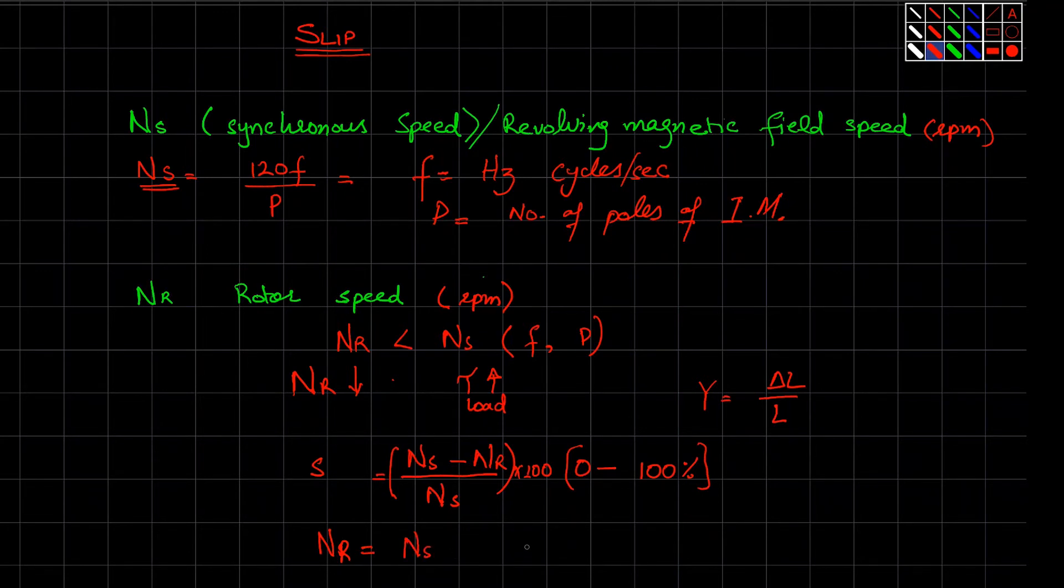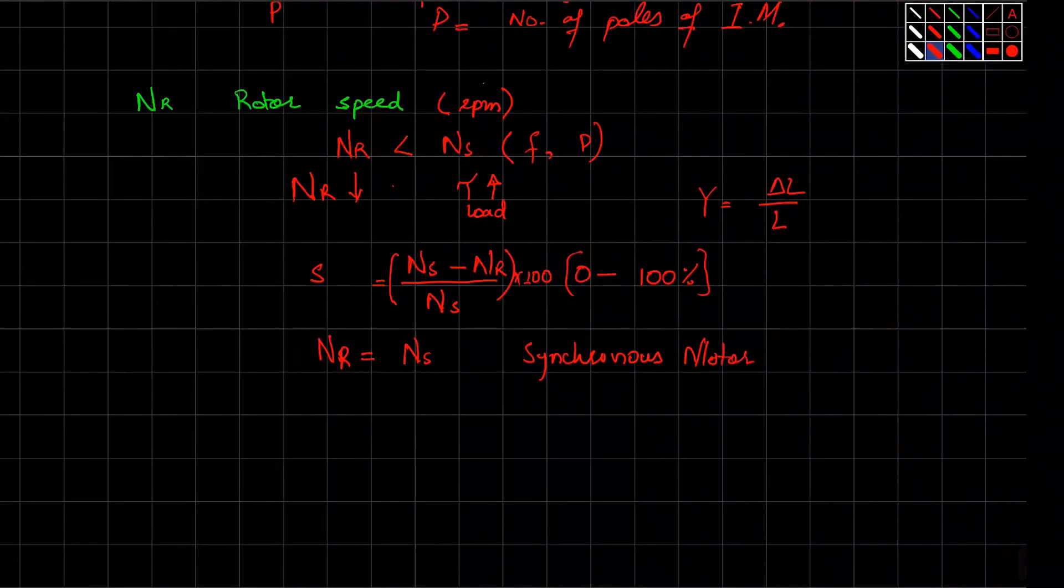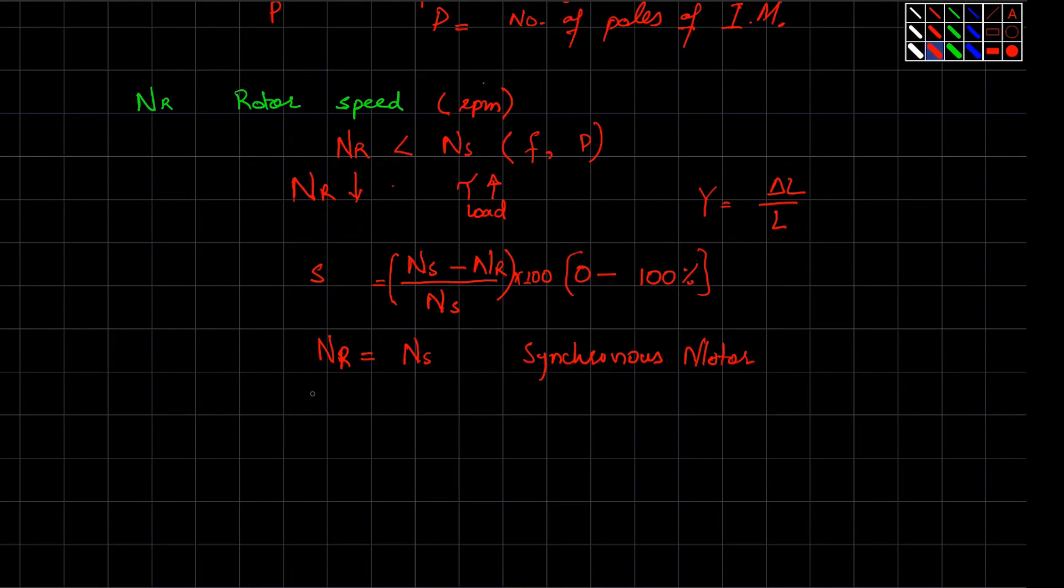Then the motor will be called a synchronous motor. Induction motor can never, in any case, reach the value of Ns. It is always less than Ns. As I told you before, Nr is always less than Ns. So one thing that will define the speed in induction motor is called slip. Slip is a very important parameter of any induction motor.